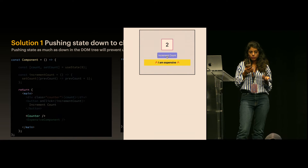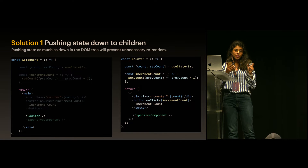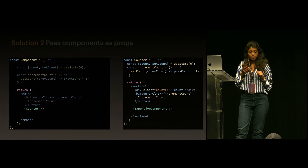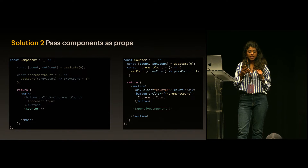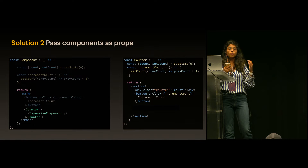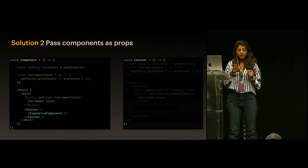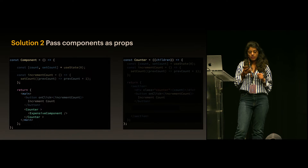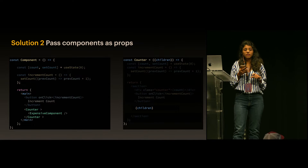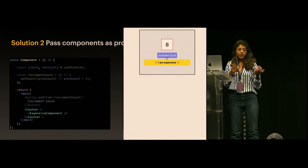There is another way to solve this: we can choose to pass the expensive component as a prop or as children. For example, I will pass the expensive component as a children prop — you can also choose to pass it as a regular prop. In the counter component, I'll import children and render it there. When components are passed as props, they are not re-rendered. Running the app now works smoothly.